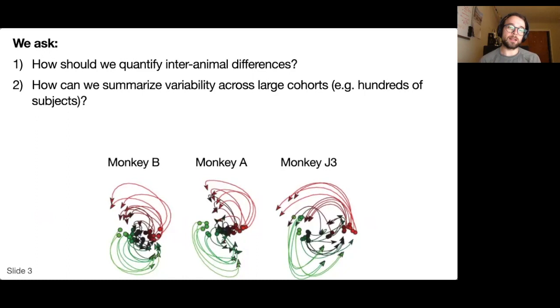Second, how can we do this analysis systematically across very large cohorts? Ideally, we'd like to have statistical methods that are scalable to tens or even hundreds of animals so that we can really make systematic analyses.